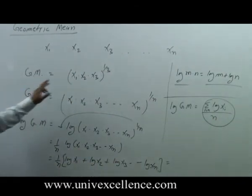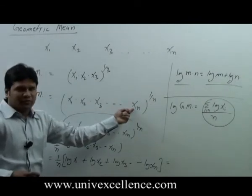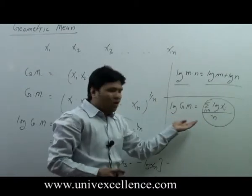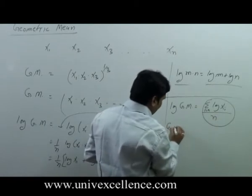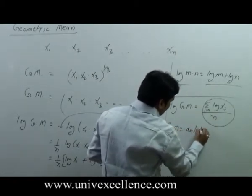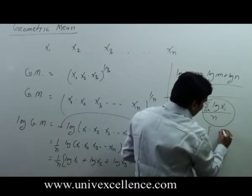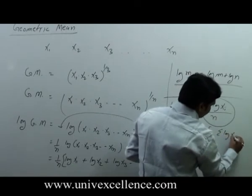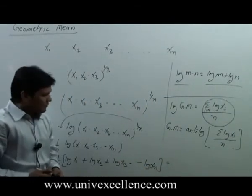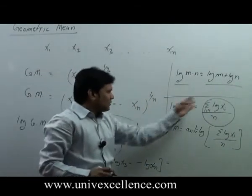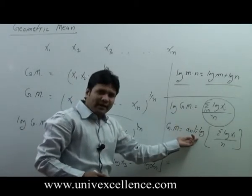So geometric mean is the nth root of the product of different values. Or, if we take the log of those values, then geometric mean can be written as the anti-log of the arithmetic mean of the log values. If we remove the log from both sides, it becomes anti-log.